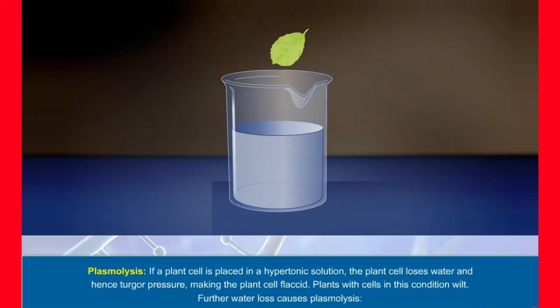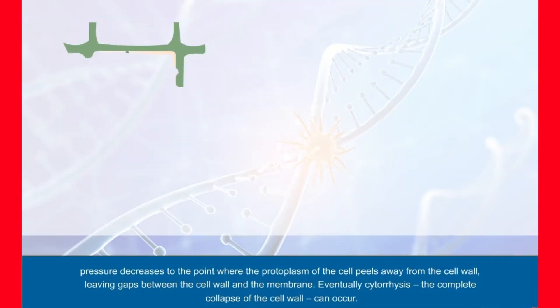Plasmolysis: If a plant cell is placed in a hypertonic solution, the plant cell loses water and hence turgor pressure, making the plant cell flaccid. Plants with cells in this condition wilt. Further, water loss causes plasmolysis. Pressure decreases to the point where the protoplasm of the cell peels away from the cell wall, leaving gaps between the cell wall and the membrane.